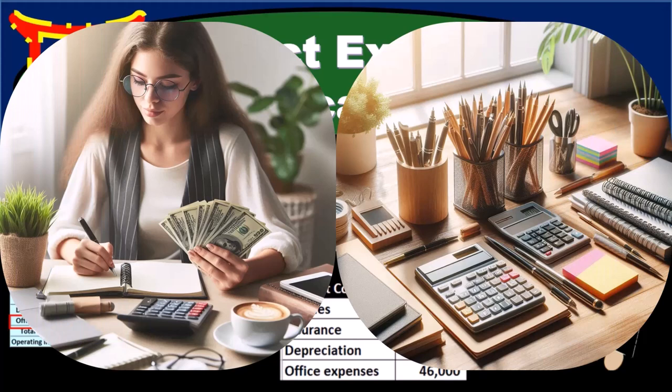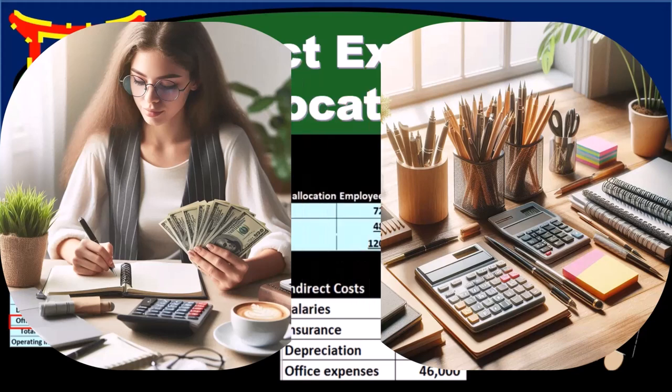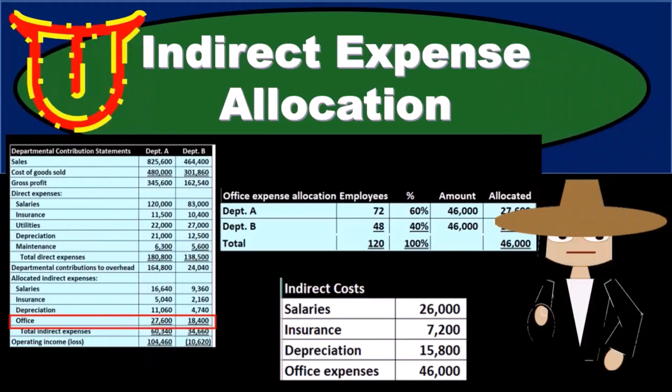The method we will use will look much the same, so note that we want to get used to the method. Once we know the method, we can apply it to basically any type of activity base that we have. Then consider the idea: why would we use different types of activity bases in order to allocate different types of indirect expenses?